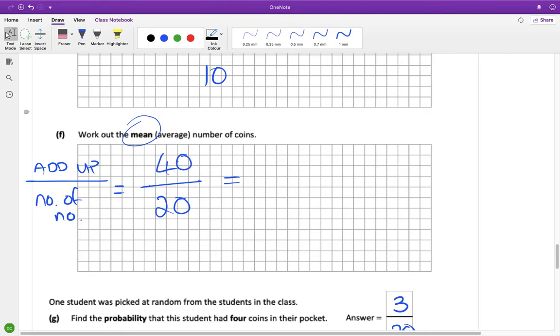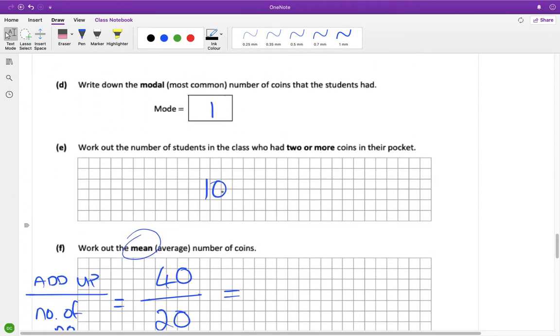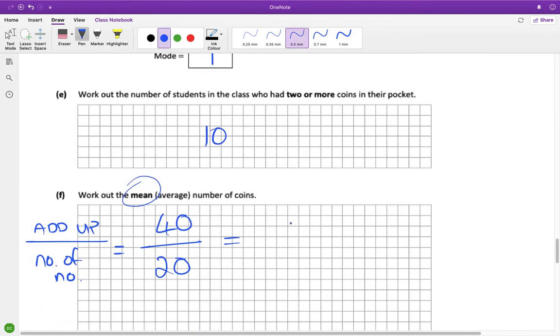Then you go back up and you count the numbers. We did that correctly, and so that's 20. And 40 divided by 20 is 2. So the answer for part f is 2.